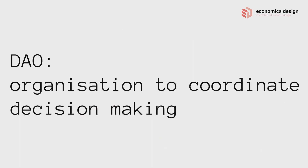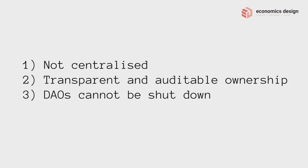Now that we understand what DAOs are, let's move on to part two: why DAOs are important. The main idea is that it is not centralized — that means no one person or entity can interfere with decision making. This also allows for transparent and auditable ownership. Transparency is key in governance and decision making. Lastly, DAOs cannot be shut down, especially when they're on blockchain — they are only shut down when there are no participants in the DAO anymore. And anyone can leave the DAO anytime.